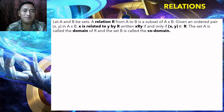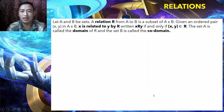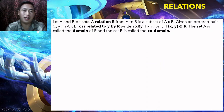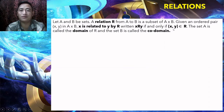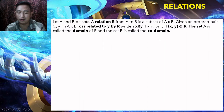Now let A and B be sets. A relation R from A to B is a subset of A cross B, the Cartesian product of A and B. Given an ordered pair (x, y) in A cross B, x is related to y by R — written x R y — if and only if (x, y) is an element in R. The set A is called the domain of R and B is the codomain.